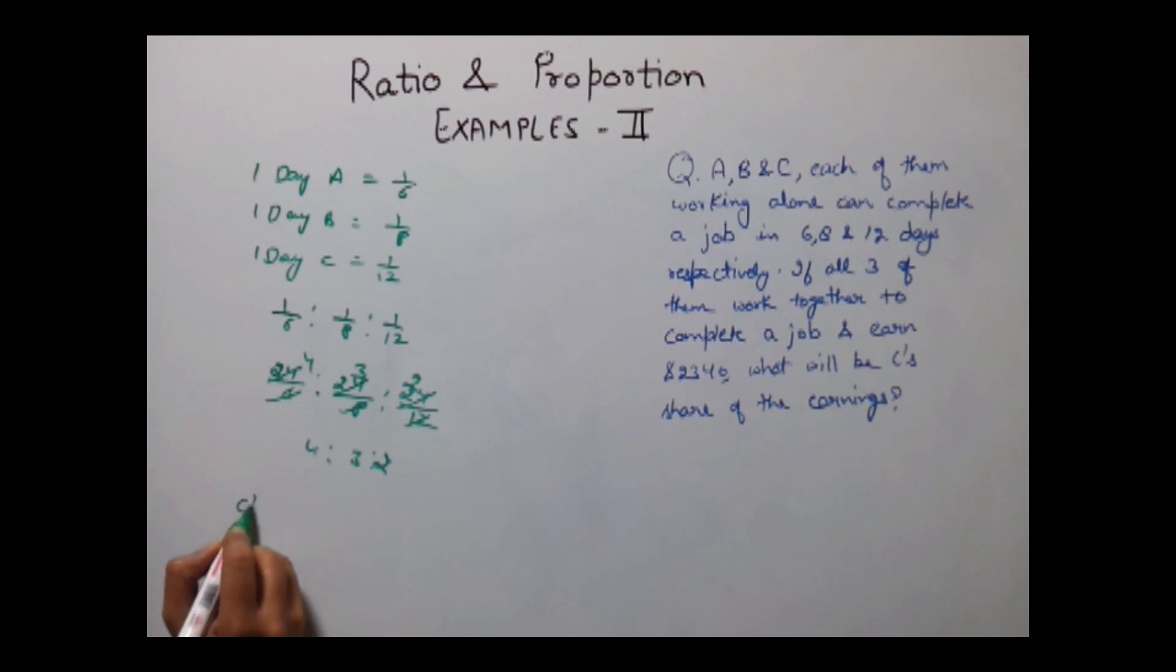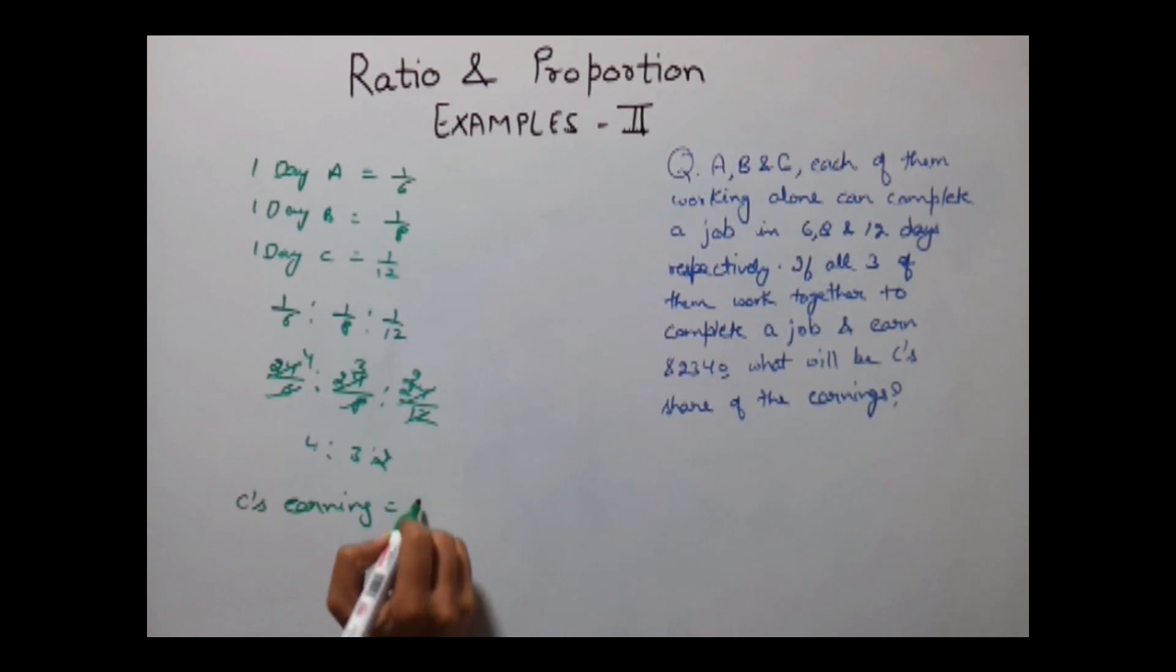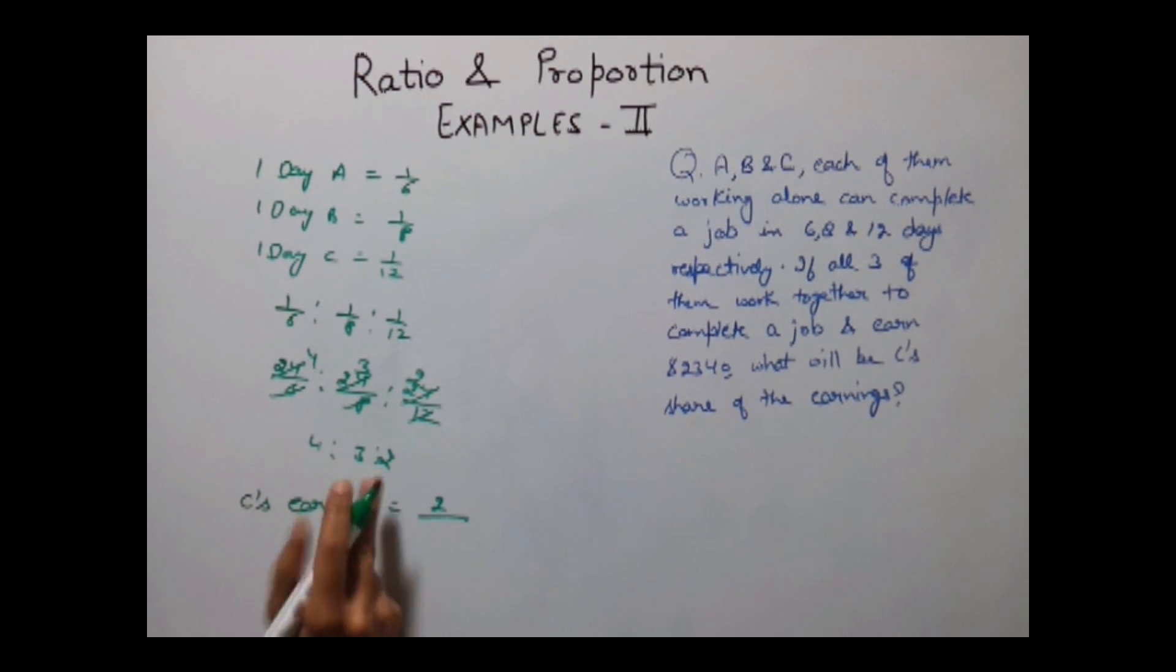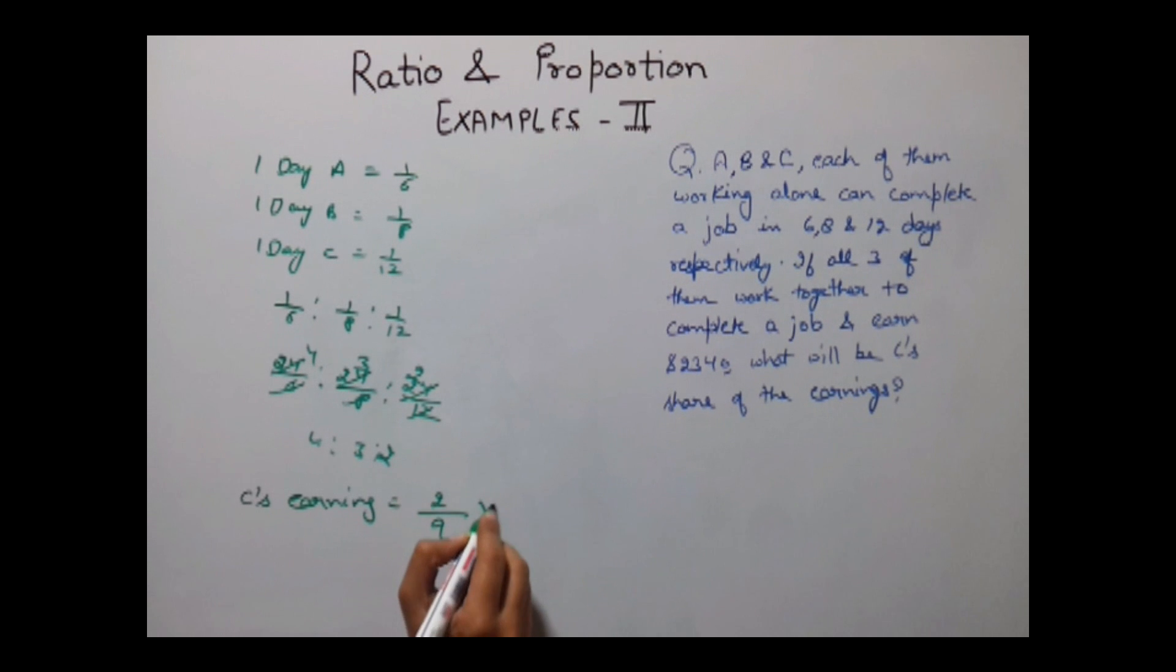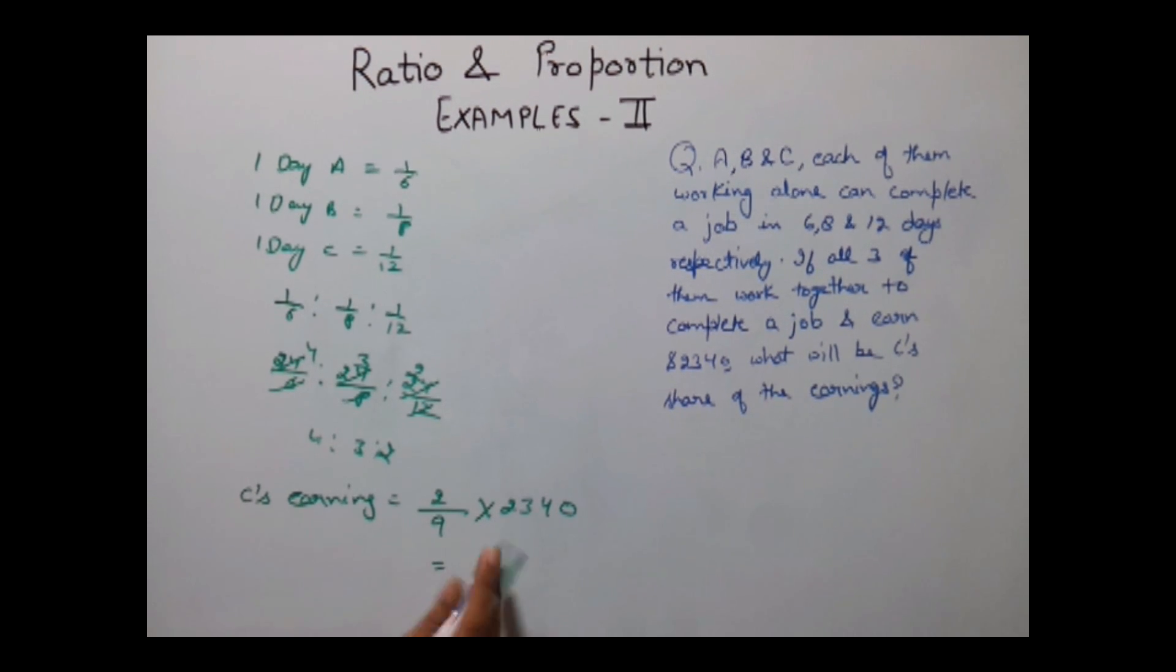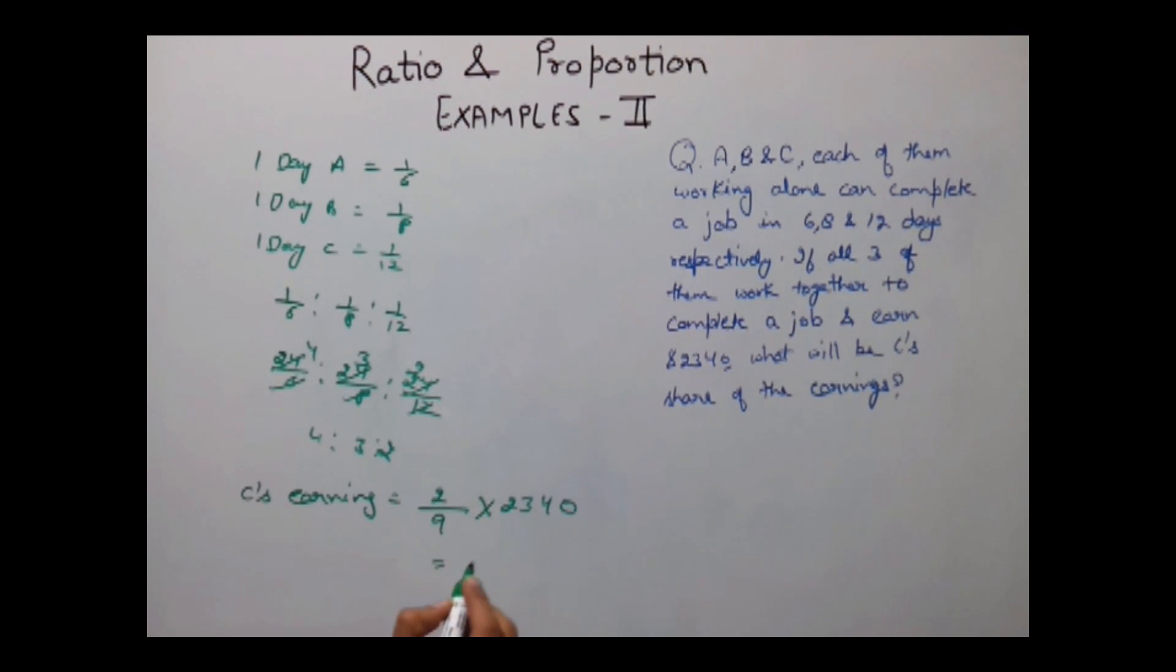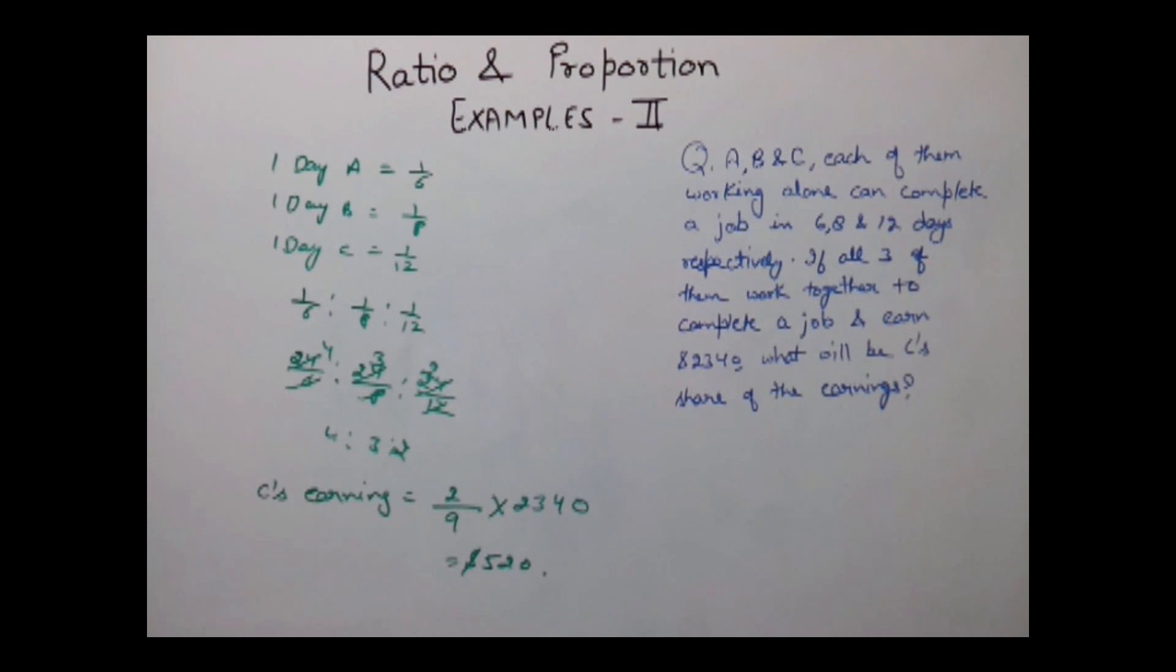The earning of C would be 2 divided by the sum of the ratio which is 4 plus 3, 7 plus 2, 9 into 2340, which will be equal to $520. So C's share in this case is $520.